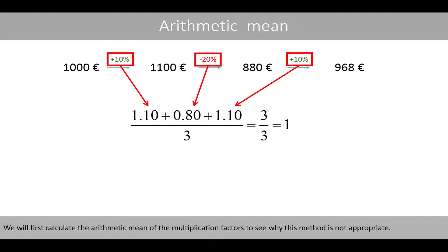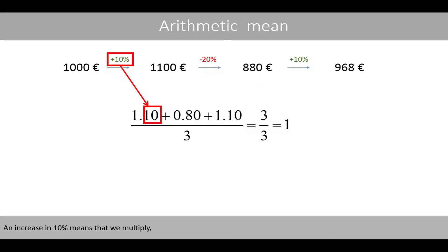We'll first calculate the arithmetic mean of the multiplication factors to see why this method is not appropriate. An increase of 10% means that we multiply 1,000 by a multiplication factor of 1.1 to get 1,100. A decrease of 20% means that we multiply 1,100 by 0.8. And finally, we multiply 880 by 1.1.